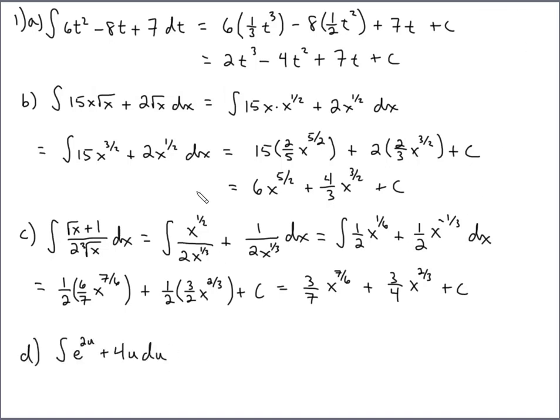Part D, we have to use the rule to integrate an exponential function, and that is, if you have E raised to the power of a number times the variable, in this case, 2U, the antiderivative is just one over that number, so that's one over two, and then you just copy the function. Remember, that's what's nice about exponential functions. Their derivatives and integrals are pretty much the same as the function, unless you've got some number up here, so if there is a number next to the variable, you just have to divide by that number, and that's what goes in front.